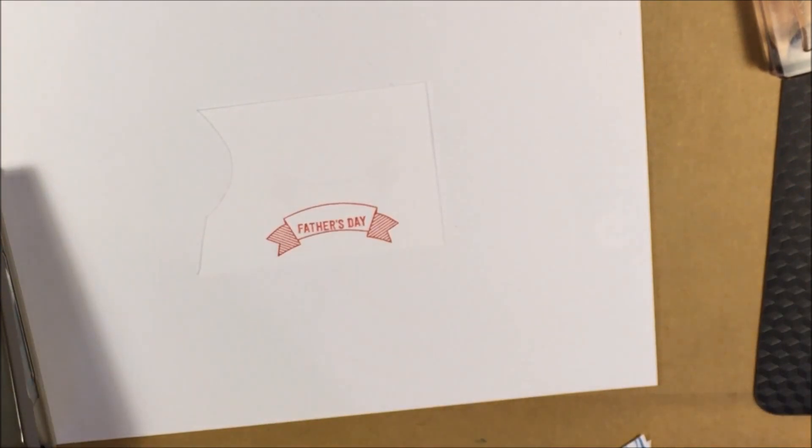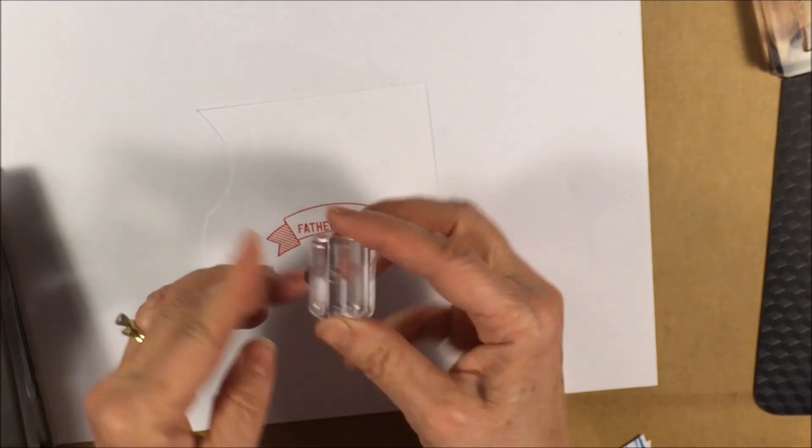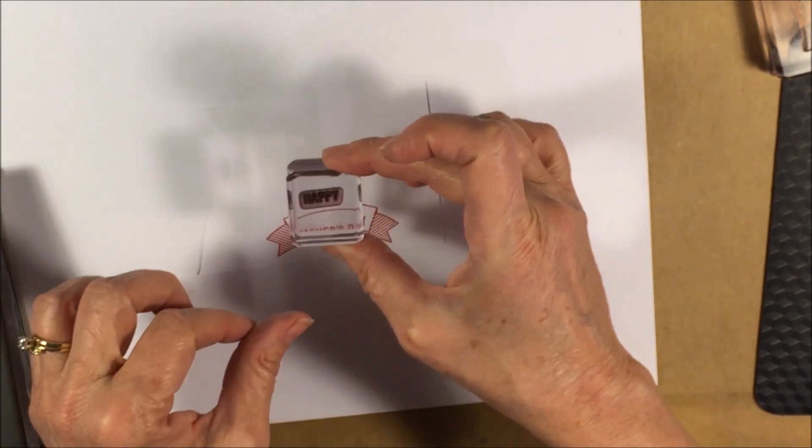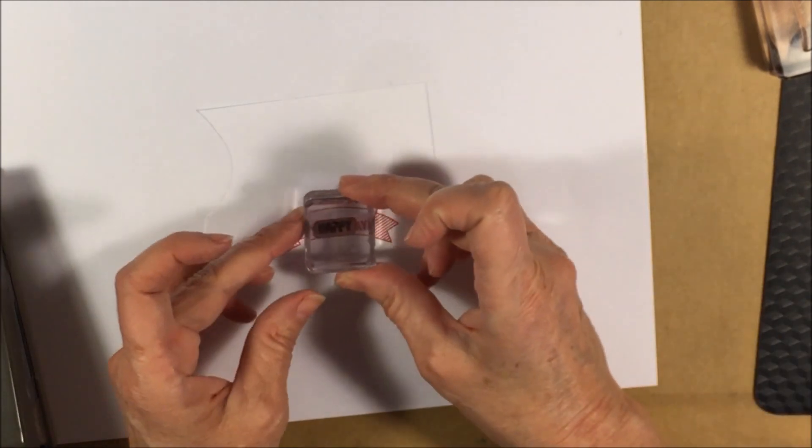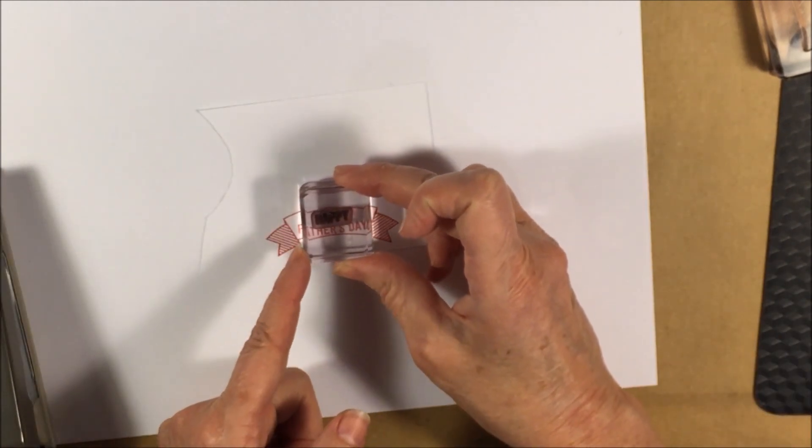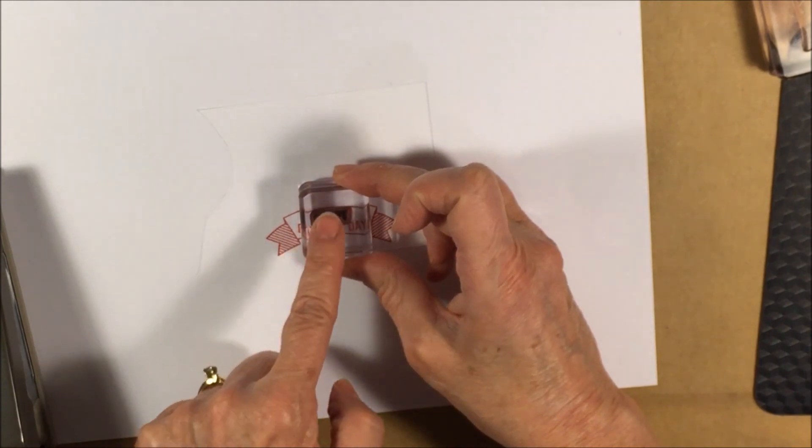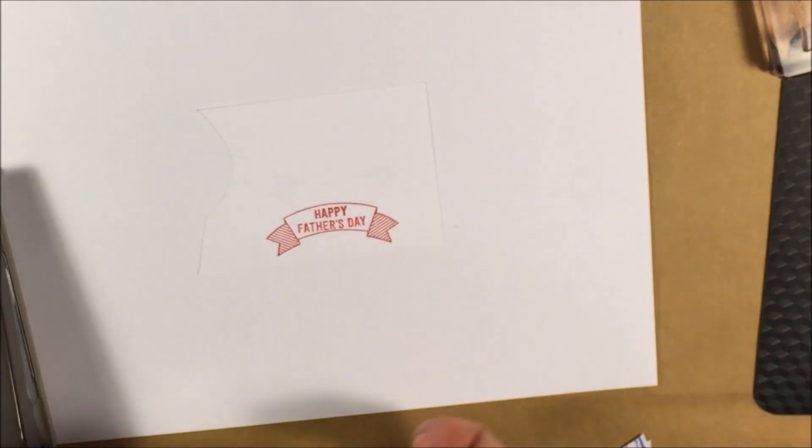And then Happy. So I got another little stamp here that says Happy. Can you see through there and see it says Happy? Ink that up. You can see right where I want to stamp it. Perfect.